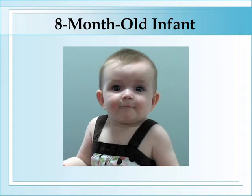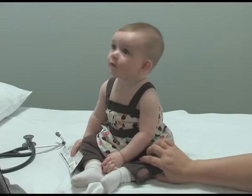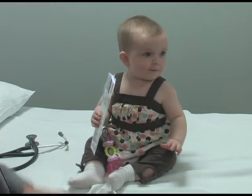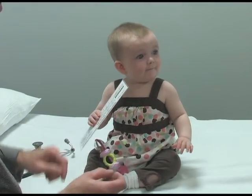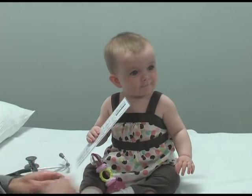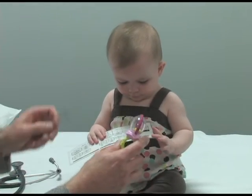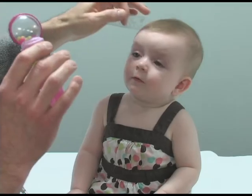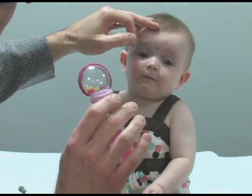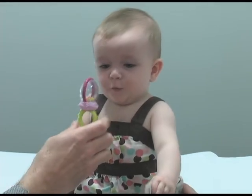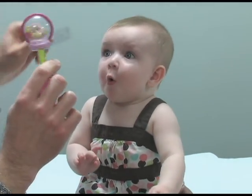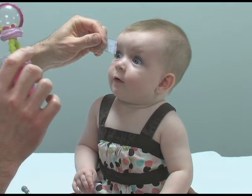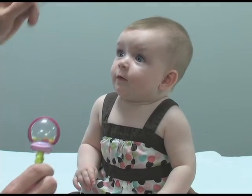Next we'll see an assessment of an eight-month-old infant. Lucy has had her length, weight, and head circumference measured. Now we're going to look at Lucy's eyes. Anything we can do to engage her is very helpful. We measure right across her inner-canthal distance and get a good look at her right palpebral fissure using the ruler, aligned with the plane of her eye — 24 millimeters.